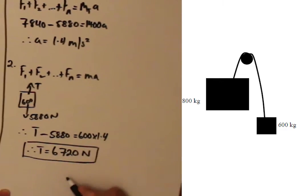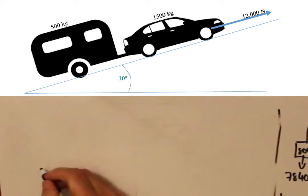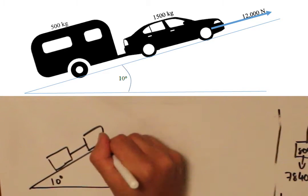The last question requires us to take the component of the weight force parallel to the incline into account. Remember, this is equal to mg sine of the angle.